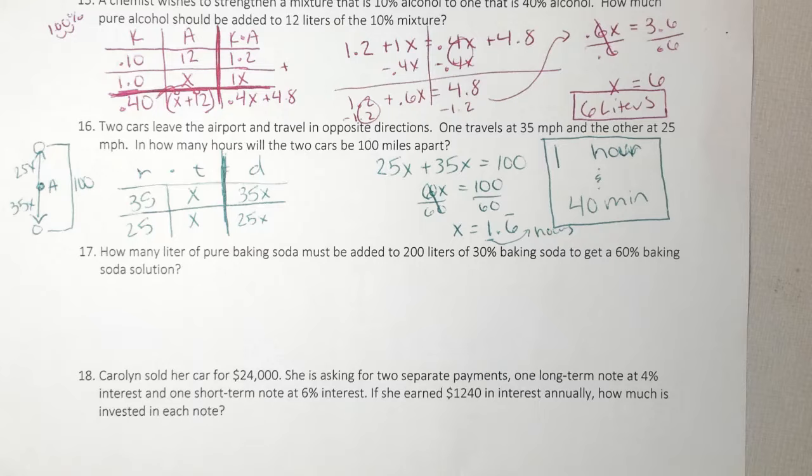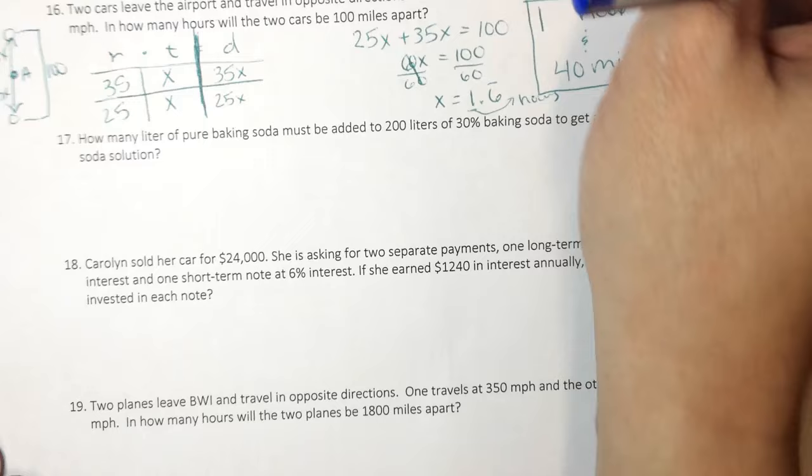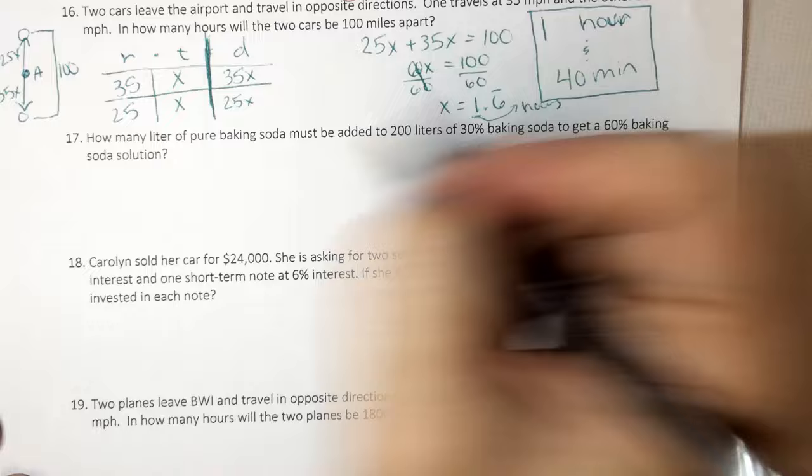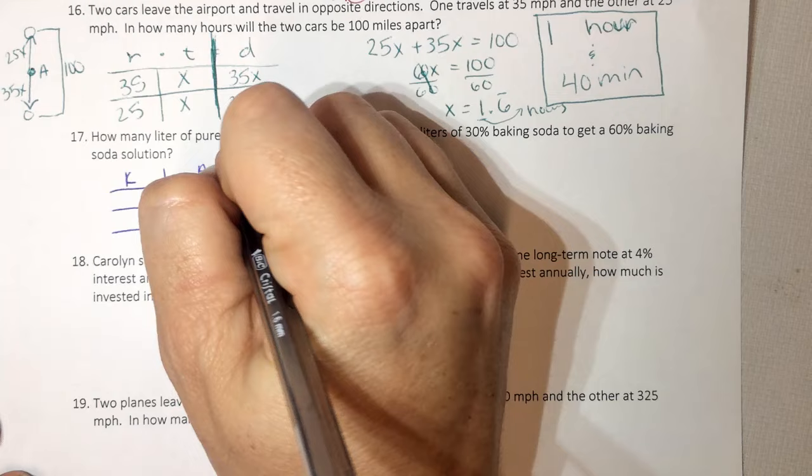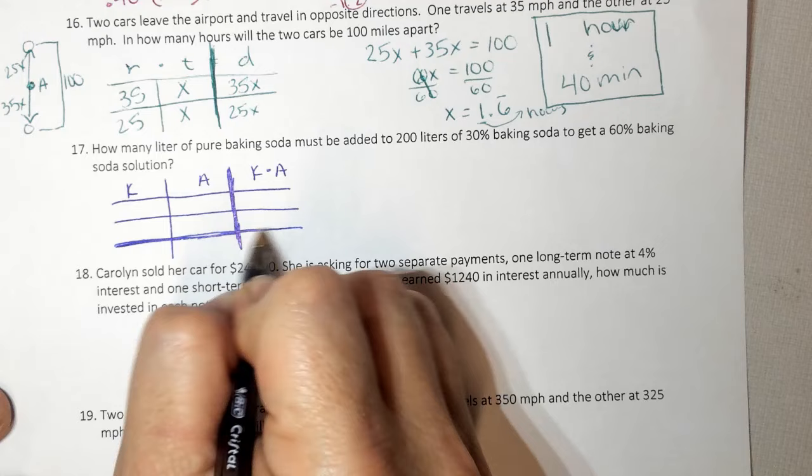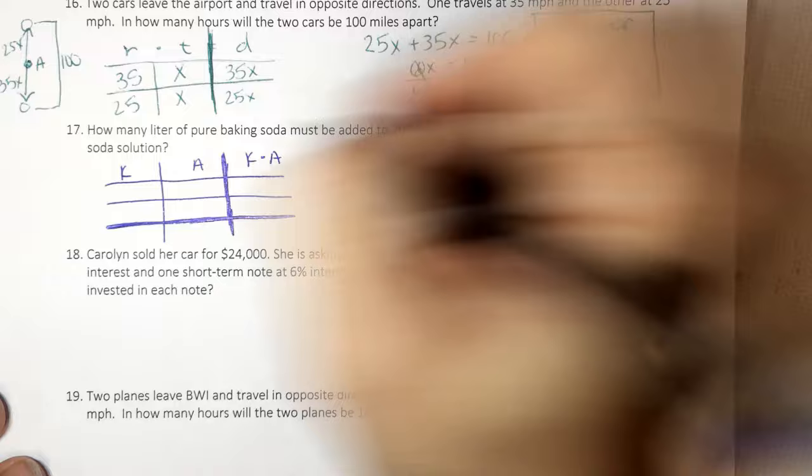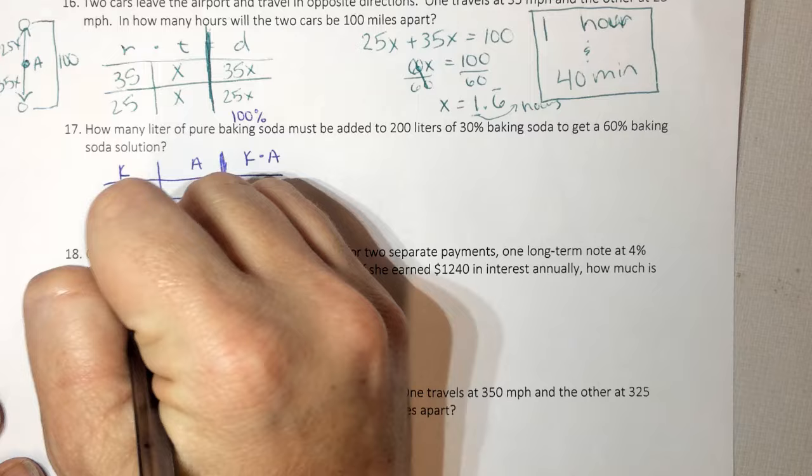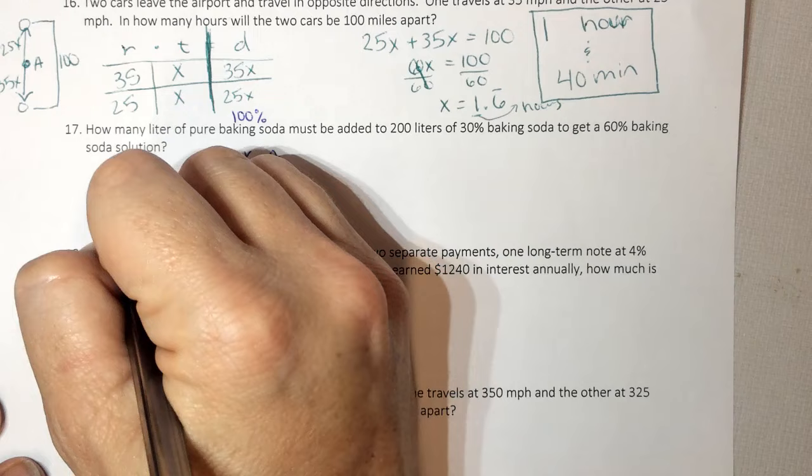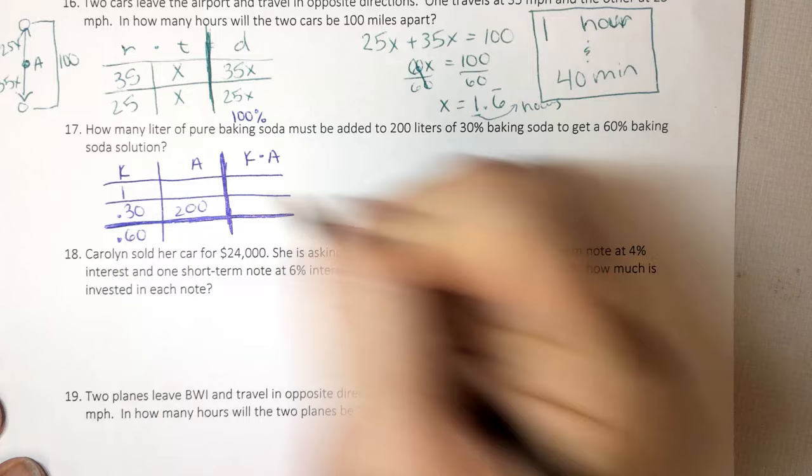Let's look at number 17. How many liters of pure baking soda? I know right away I'm talking about mixture. So I have kind times amount. So it says how many liters of pure baking soda? 100%. Must be added to 200 liters of 30%. So I know I'm adding those, that's what's going to be at the top, to get a 60%. So I'm creating the 60%. So I'm using pure, which is 1. And then 30%, which is 0.30.